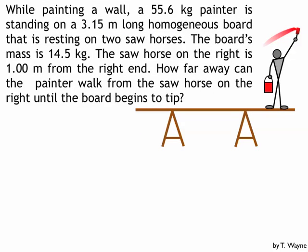So here's a question. While painting a wall, a 55.6 kg painter is standing on a 3.15 m long homogeneous board that is resting on two sawhorses. The board's mass is 14.5 kg. The sawhorse on the right is 1.00 m from the right end. How far away can the painter walk from the sawhorse on the right until the board begins to tip?